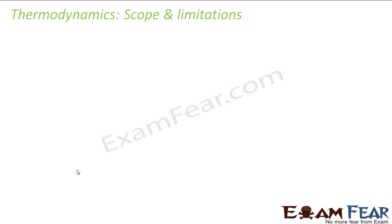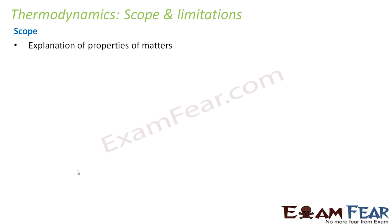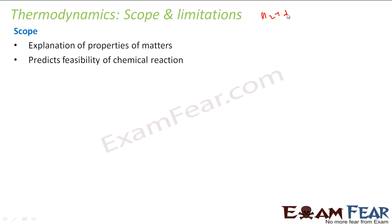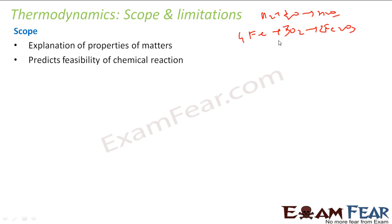Before we start thermodynamics in detail, let's talk about the scope and limitations. The scopes are: explanation of properties of matter — it explains why solid is solid, why liquid is liquid, why gas is gas, and why matter behaves the way it does. It predicts the feasibility of chemical reactions. For example, H₂ + ½O₂ → H₂O, or the rusting reaction iron + oxygen → Fe₂O₃ — thermodynamics can tell you whether these reactions are feasible or not. Thermodynamics will help us determine that.